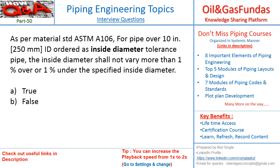Next question: as per ASTM A106, for pipe size over 10 inch ID ordered as inside diameter tolerance pipe, the inside diameter shall not vary more than 1% over and 1% under the specified inside diameter. Is this a true or false statement?